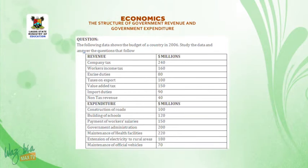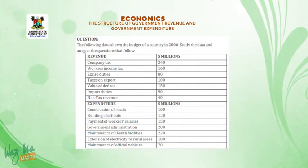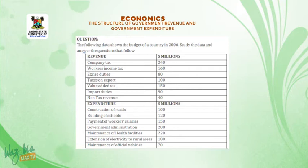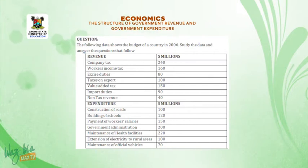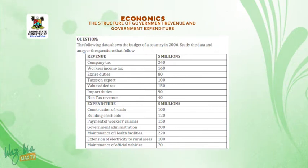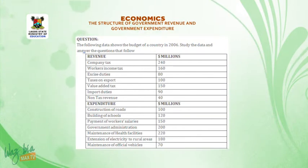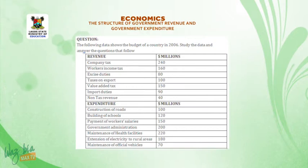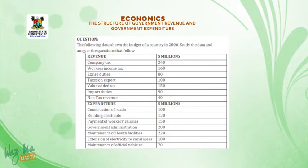Revenue (in dollar millions): Company tax 240, Workers' income tax 160, Excise duties 80, Tax on export 100, Value added tax 150, Import duties 90, Non-tax revenue 40. Expenditure (in dollar millions): Construction of roads 100, Building of schools 120, Payment of workers' salaries 150, Government administration 200, Maintenance of health facilities 220, Extension of electricity to rural areas 180, Maintenance of official vehicles 70.